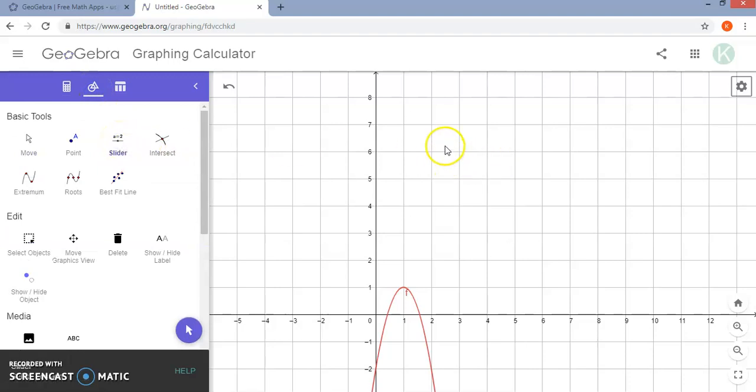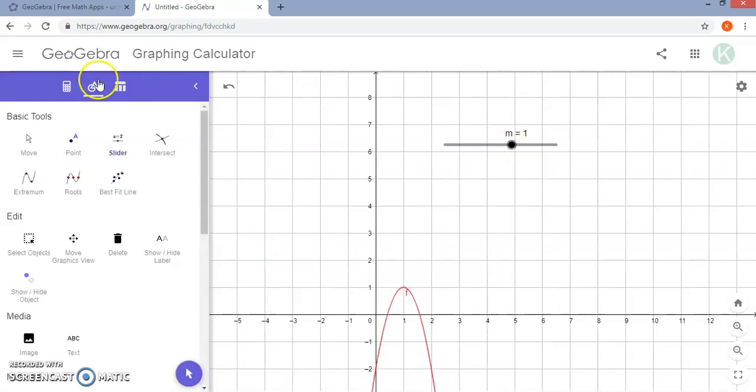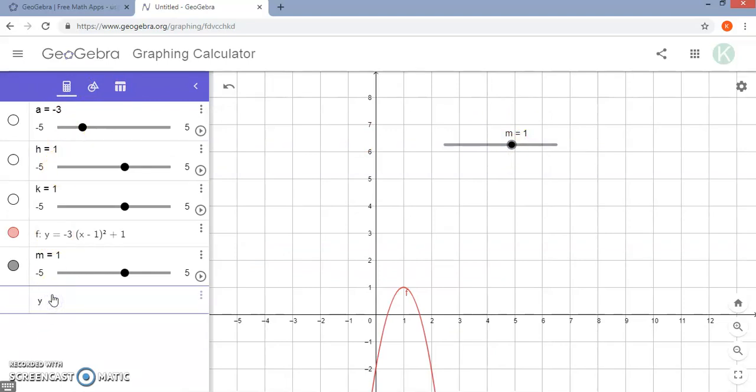You can add a slider and place it somewhere on the graph. I'm going to make this one be M, and it will add the slider. Then if I come and I write a new equation using that value for M, as I move the slider, M will adjust in that equation.